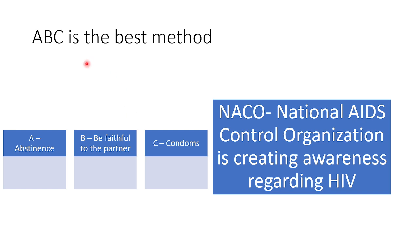A, B, C is the best method to prevent the spread of AIDS. A — abstinence. B — being faithful to the sexual partner. C — use of condoms. And NACO, the National AIDS Control Organization, is creating awareness regarding HIV.